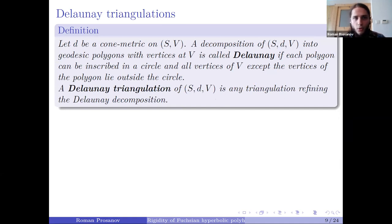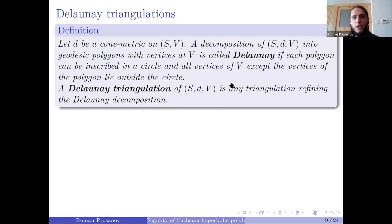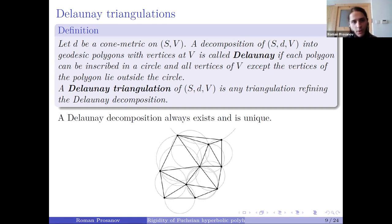Quickly recalling the definition: a decomposition of a surface with marked points into geodesic polygons with vertices at the marked point set is called Delaunay if each polygon can be inscribed in a circle such that all other vertices of the marked point set lie outside. The Delaunay triangulation is any triangulation refining the Delaunay decomposition. The Delaunay decomposition always exists and is unique, and generically it is a triangulation — though for non-generic metrics there can be several Delaunay triangulations.